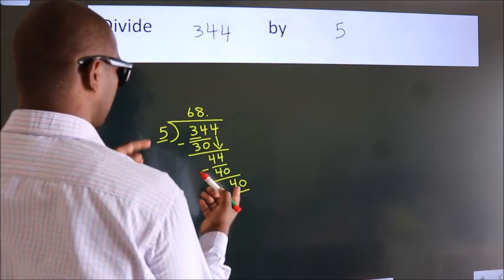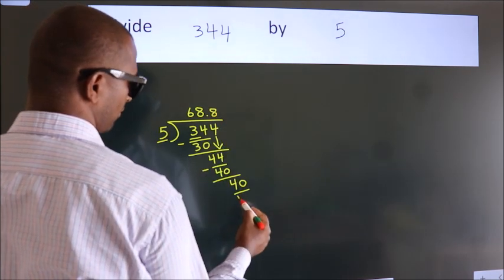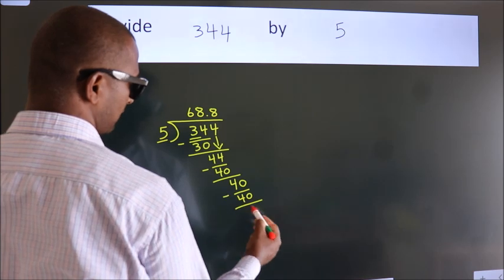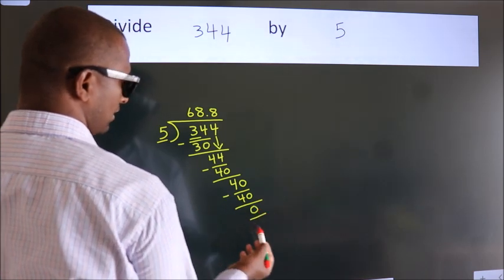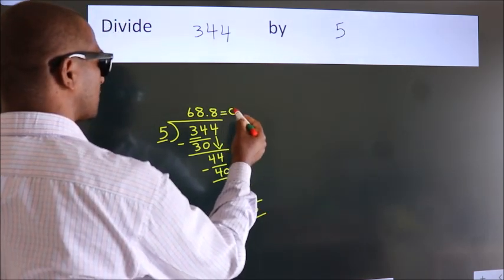When do we get 40 in the 5 table? 5 times 8, 40. Now we subtract. We get 0. We got remainder 0. So this is our quotient.